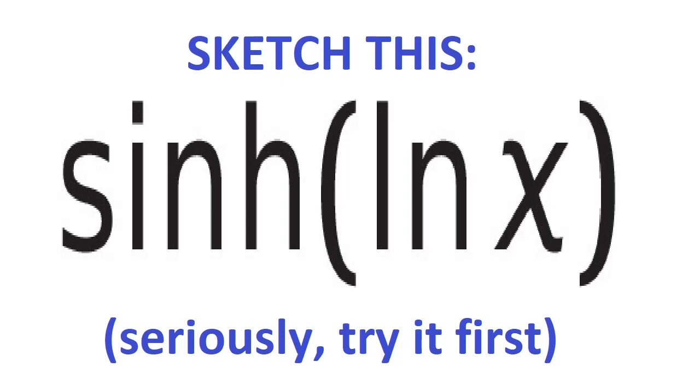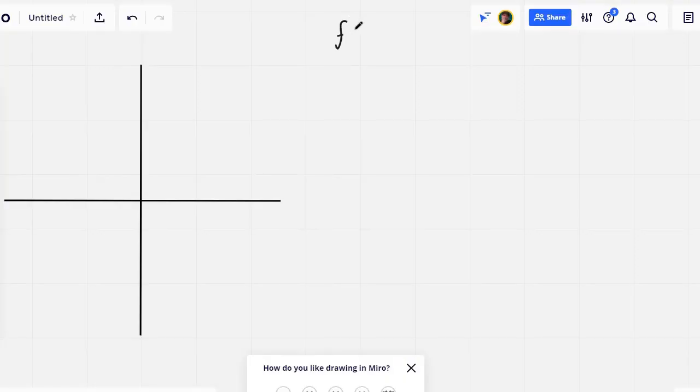Here we go. We begin by writing out the function: f(x) = sinh(ln x), and we're going to do this over the real numbers.